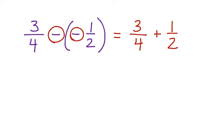Now we have a simple problem where we're adding two positive rational numbers. The first thing we have to do is find a common denominator between 4 and 2. We can choose 4. If we choose 4 as our common denominator, the first rational number, 3 fourths, is going to stay the same.